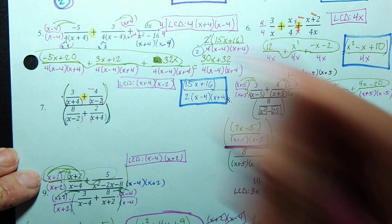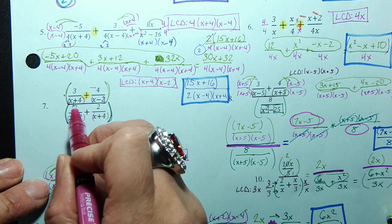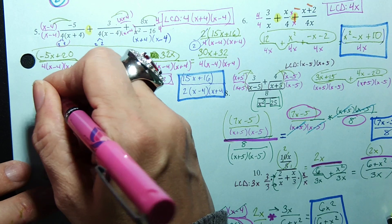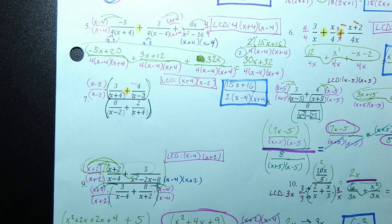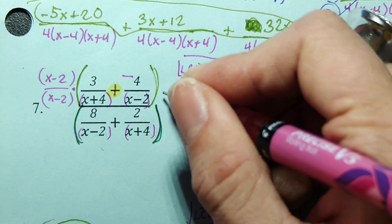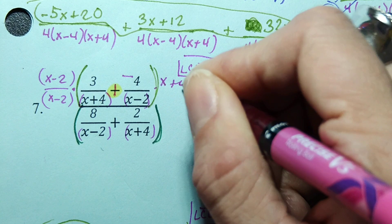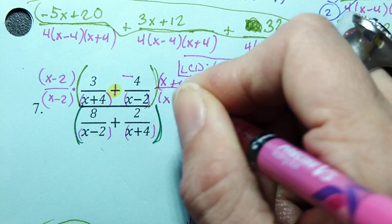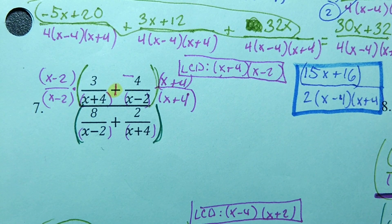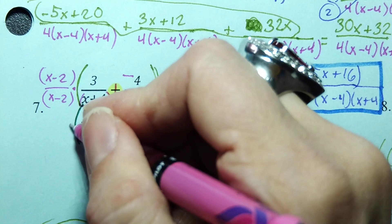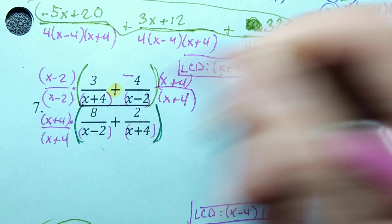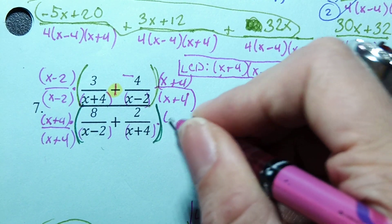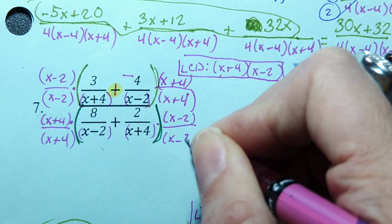So that's cool because that means we should have some nice simplification at the end of all of this. So let's go ahead and use our creative forms of 1 so that we can add these fractions together. This has the x plus 4. It's missing the x minus 2. So x minus 2 over x minus 2 as our creative form of 1. For the fraction on the right, we will have x plus 4 over x plus 4. And then let's go ahead and do the bottom as well. This one is missing x plus 4 over x plus 4. And then this one, x minus 2 over x minus 2.